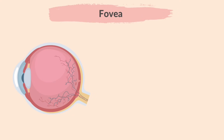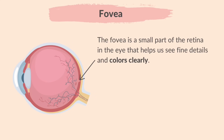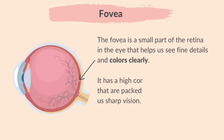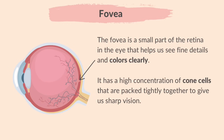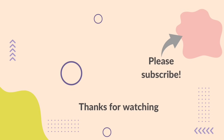You are expected to identify the position of the fovea in diagrams. The fovea is a small part of the retina that helps us see fine details and colors clearly. It has a high concentration of cone cells packed tightly together to give us sharp vision. That concludes Part 2 of Chapter 14: Coordination and Response. Please share your thoughts and suggestions in the comments. Thank you for watching and don't forget to subscribe to IGCSE Study Buddy for more biology revision videos.